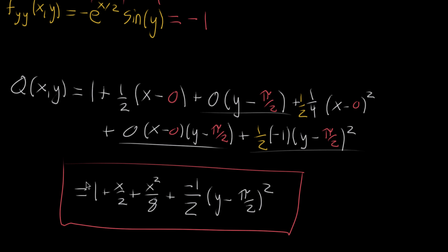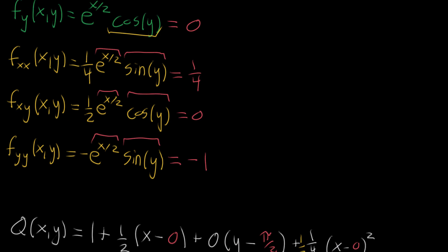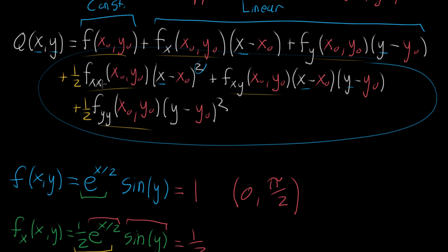In the next couple of videos, I'm going to talk about a simpler — or rather, more generalizable — form of writing down this quadratic approximation using vector notation. Right now we're limited to two variables, and you can imagine how monstrous this might look with even a three-variable function, considering all the different possible second partial derivatives. But there is a nice general way to write all of these, so I'll see you in the next video.